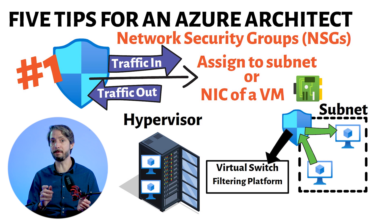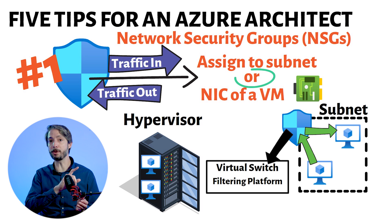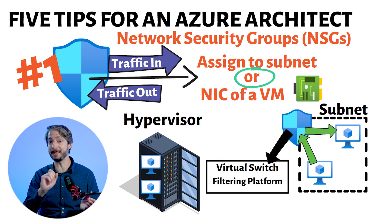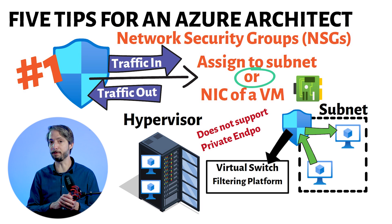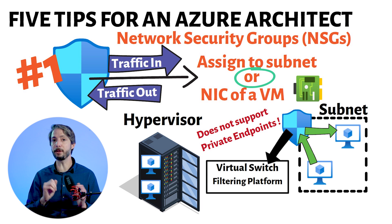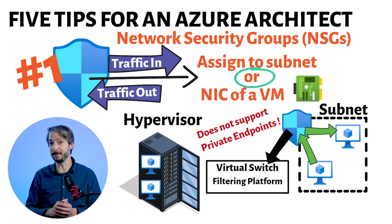Microsoft recommends to only apply NSGs to either subnet or NIC level, not on both simultaneously, as it will make management cumbersome. NSGs, as done today, do not support filtering of private endpoints. This feature is however in public preview, which if you enable it, allows you to test it out already now.